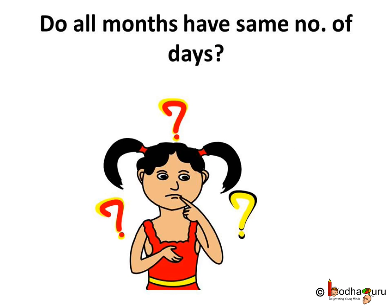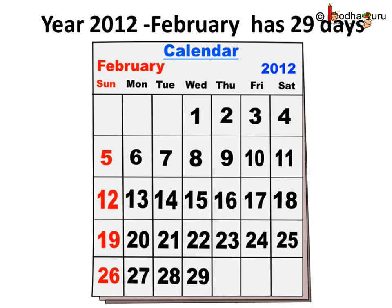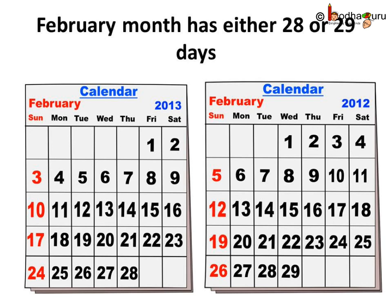Do all the months have the same number of days? Let us check the month of February. Here, February month has 28 days for the year 2013. Let us check the last year calendar, i.e. 2012. There were 29 days. So the month of February has either 28 days or 29 days.